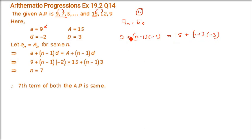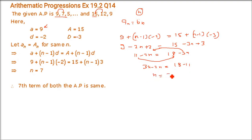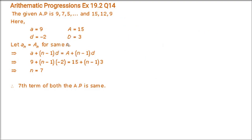So you get: 9 minus 2n plus 2 equals 15 minus 3n plus 3. So 11 minus 2n equals 18 minus 3n. Taking like terms to one side: 3n minus 2n equals 18 minus 11, so n equals 7. The 7th term of both APs is the same value.